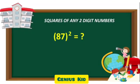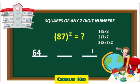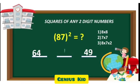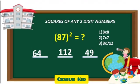Now, let's consider the last example. 87 square. So, the first number will be 8 times 8, which is 64. The last number will be 7 times 7, which is 49. And the middle number will be 8 times 7 times 2, which is 112. Let's apply carry over.